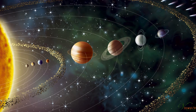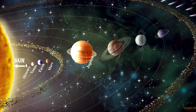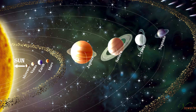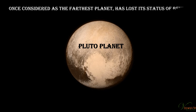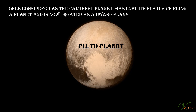In the order of their increasing distance from the Sun, the planets are Mercury, Venus, Earth, Mars, Jupiter, Saturn, Uranus, and Neptune. Once considered the farthest planet, Pluto lost its status of being a planet and is now treated as a dwarf planet.